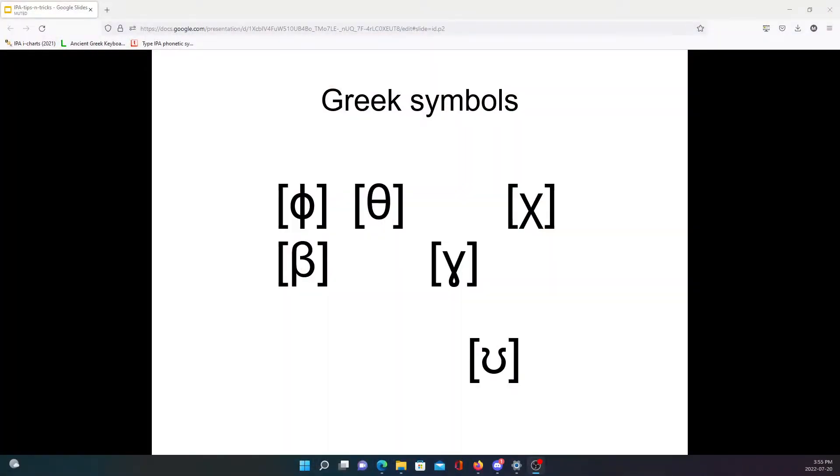In the IPA, we have six Greek letters, or modified Greek letters, representing various sounds. So let's have a quick look at them as a way of trying to help remember these symbols. Here are the six symbols, and I find that knowing the names of these letters in the modern Greek alphabet is the most helpful way to approach them.